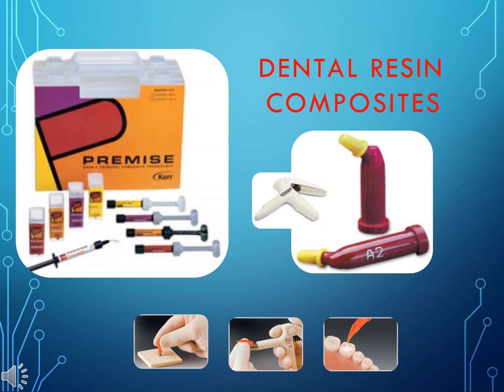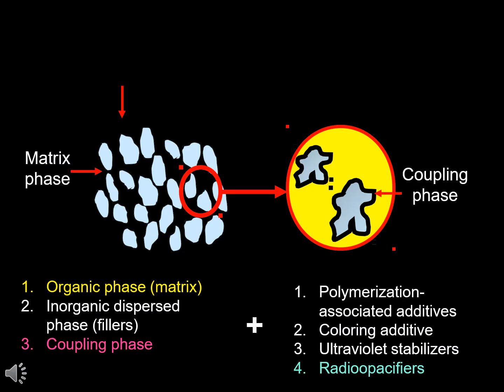Dental Resin Composites consist of several phases: the Organic Phase (Matrix), the Inorganic Dispersed Phase (Fillers), and the Coupling Phase. Additional components include Polymerization-Associated Additives, Coloring Additives, Ultraviolet Stabilizers, and Radio-Opacifiers.